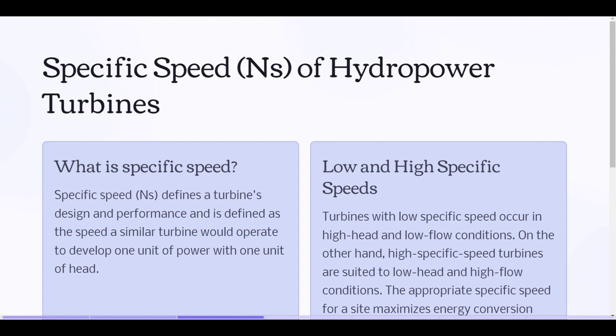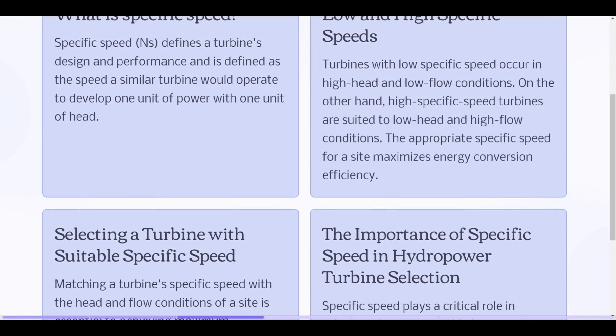Low and high specific speeds: Turbines with low specific speed occur in high head and low flow conditions. On the other hand, high specific speed turbines are suited to low head and high flow conditions. The appropriate specific speed for a site maximizes energy conversion efficiency.